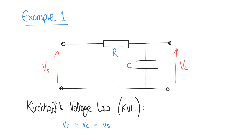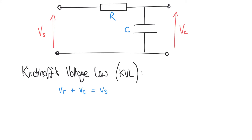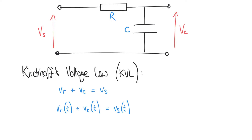The voltages across each of the two components — the voltage across the resistor VR and the voltage across the capacitor VC — must add up to the supply voltage VS. We'll reflect that our voltages are functions of time, since the capacitor might charge or discharge, meaning its voltage will change over time, and VR might change as well. So we write VR(t) plus VC(t) equals VS(t). Our output is VC, so let's find an expression for it.